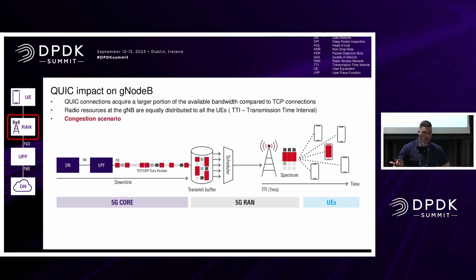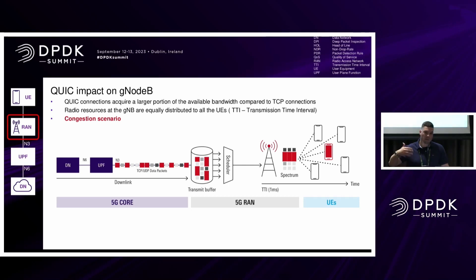Now consider a congestion scenario, like in a stadium. Once you have a higher impact of QUIC with more unfair congestion control, you're going to see at some point an overload on the cell. You're going to drop packets, and because of the congestion behavior of QUIC, you might get impaired service.